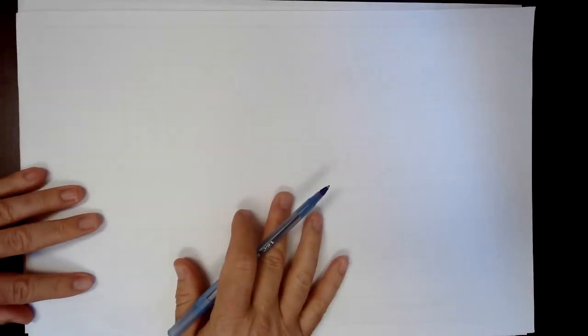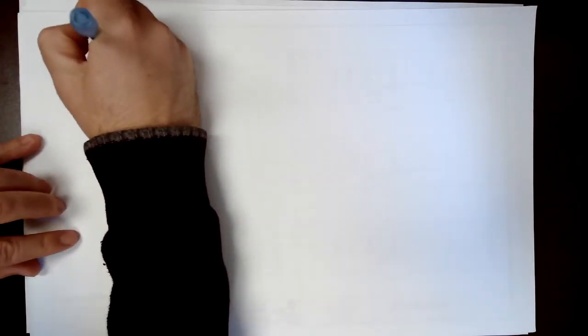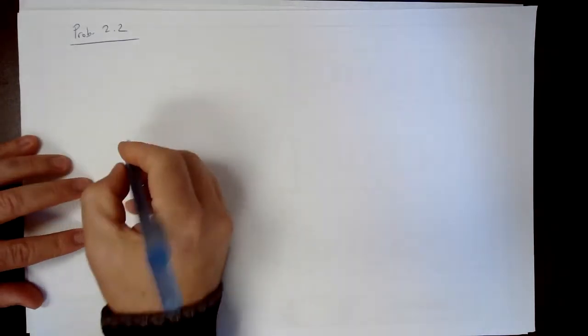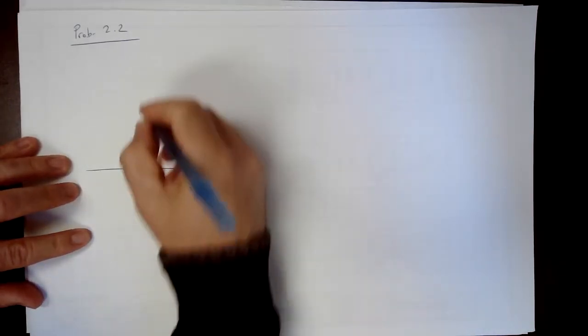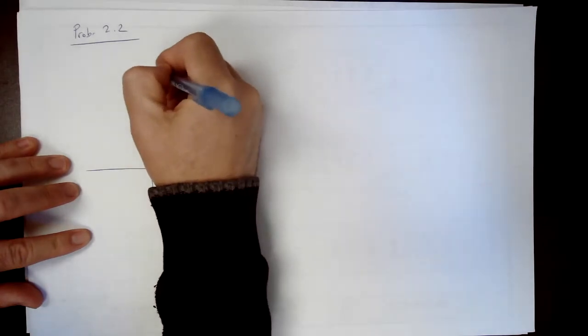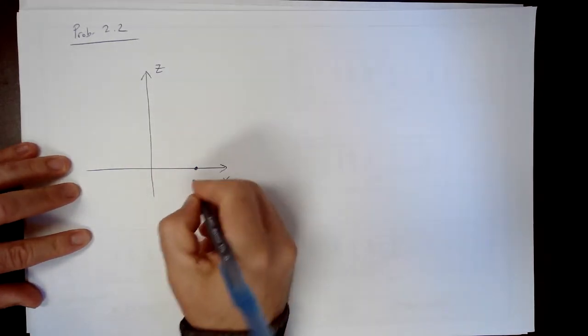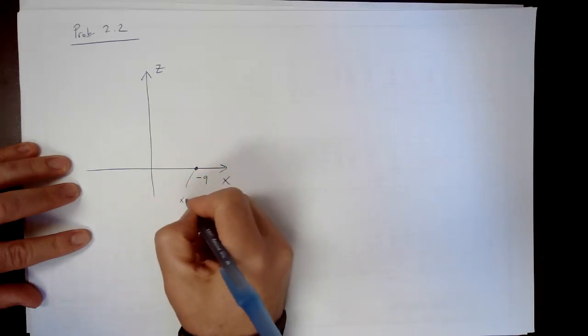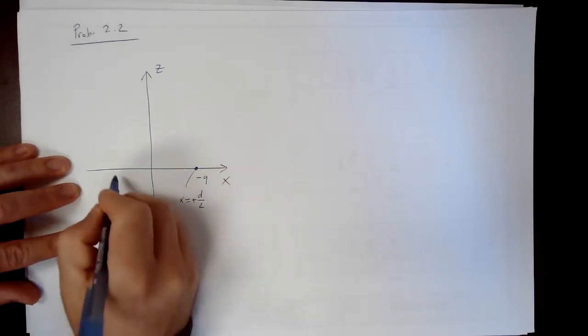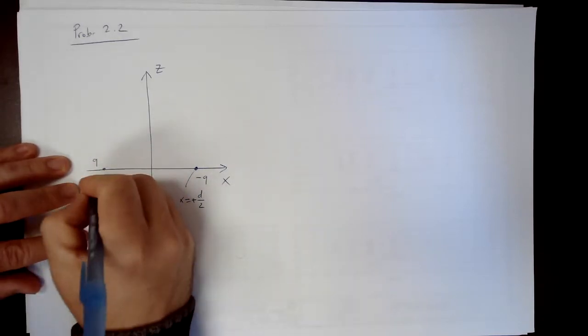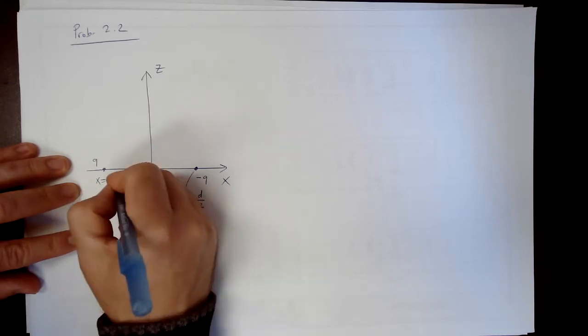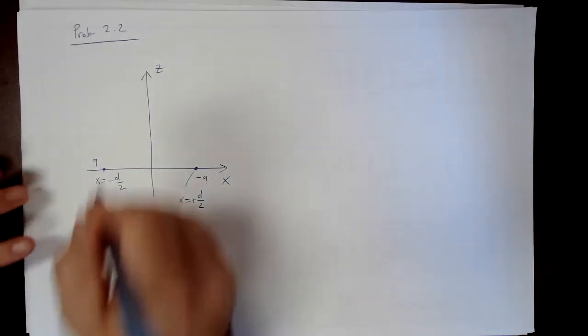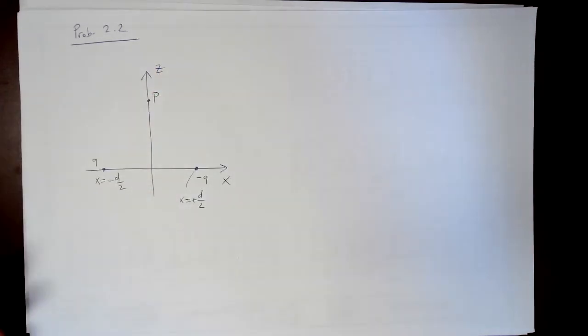So now, let me, this is problem 2.2. And x-axis, z-axis. This is charge negative q. And again, this is at x equals plus d over 2. And there's another one that's positive q. And this is x equals negative d over 2. And point p here.